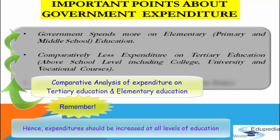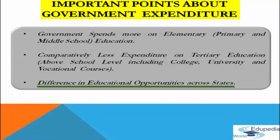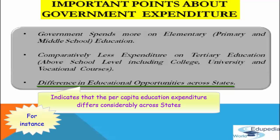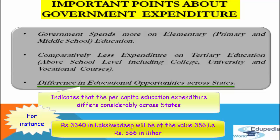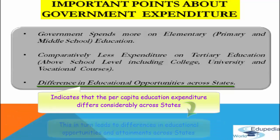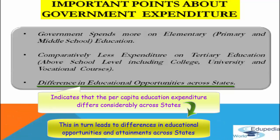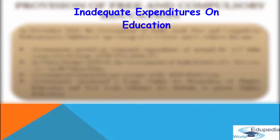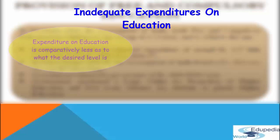There are differences in educational opportunities across states. The per capita education expenditure differs considerably — from as high as Rs. 3,440 in Lakshadweep to as low as Rs. 386 in Bihar. This leads to significant differences in educational opportunities and attainments across states.